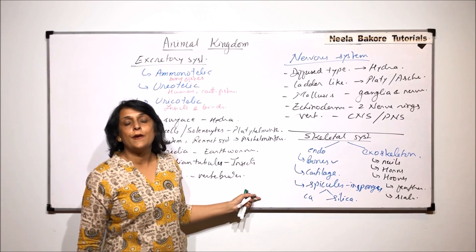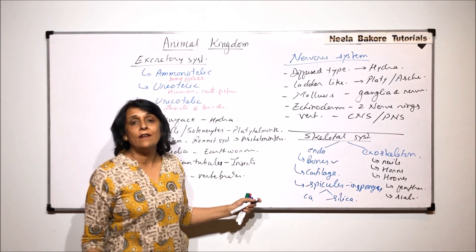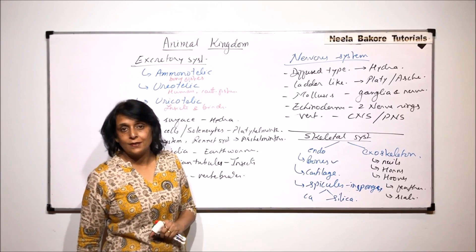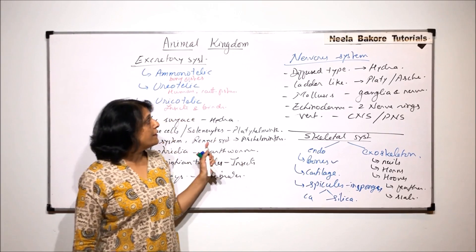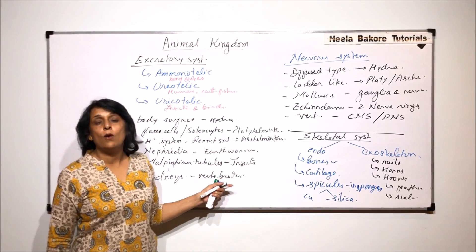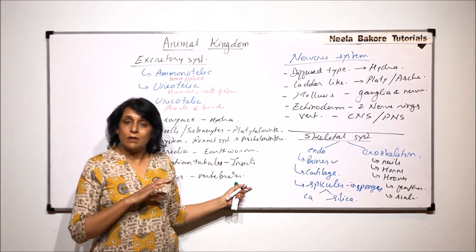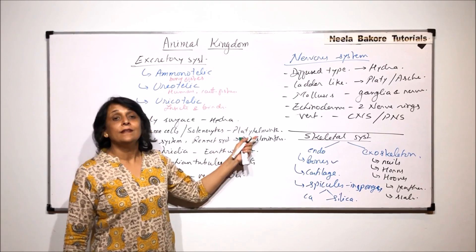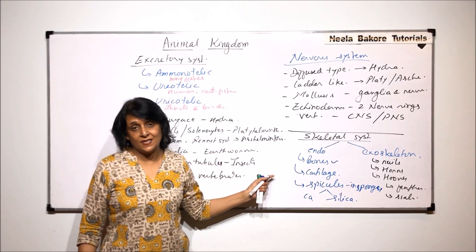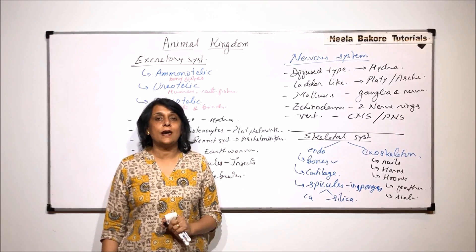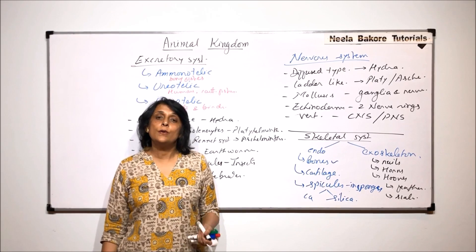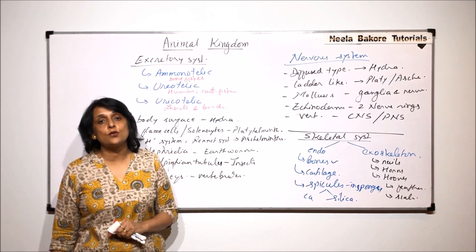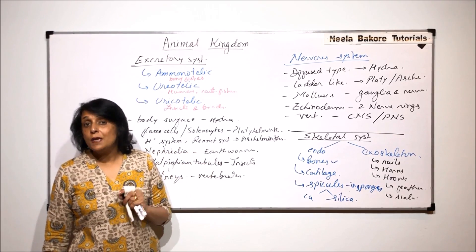So here we have compared and classified animals on the basis of three systems: excretory, nervous, and skeletal. In the next part we will try to understand how we can classify these animals on the basis of reproduction.